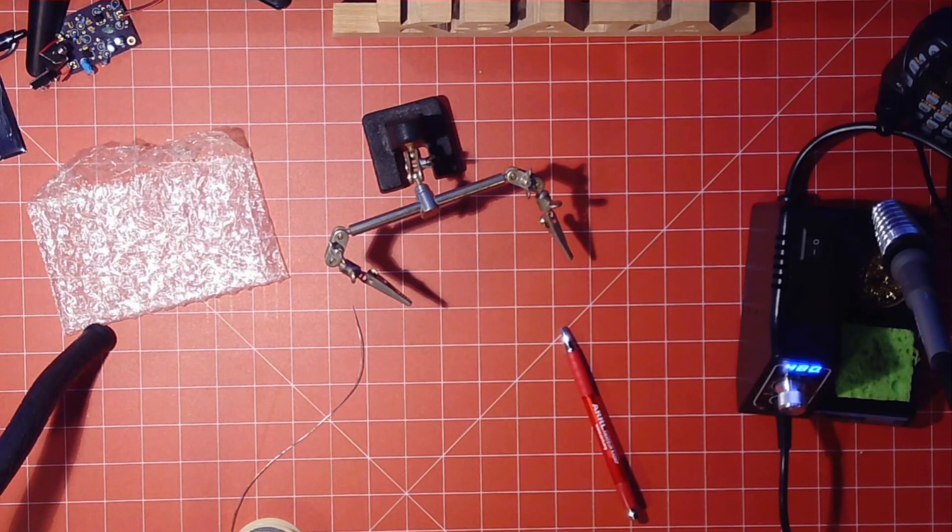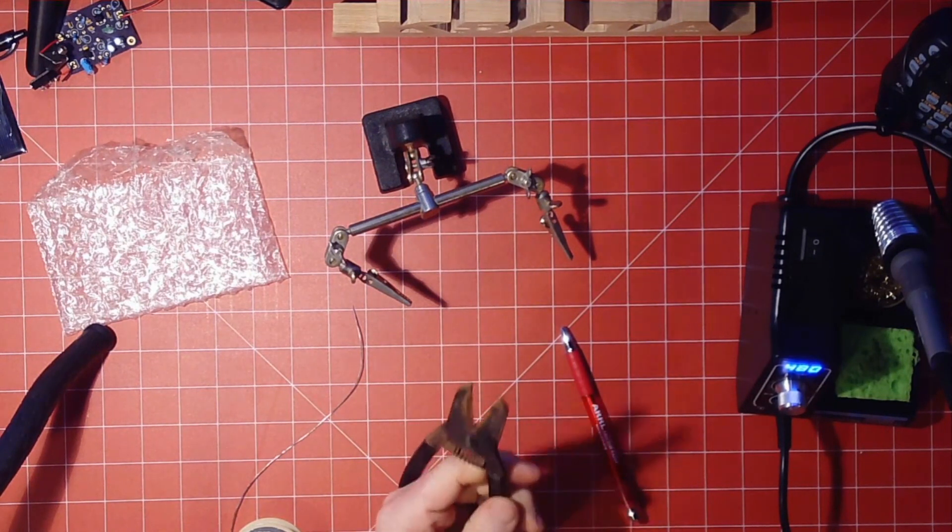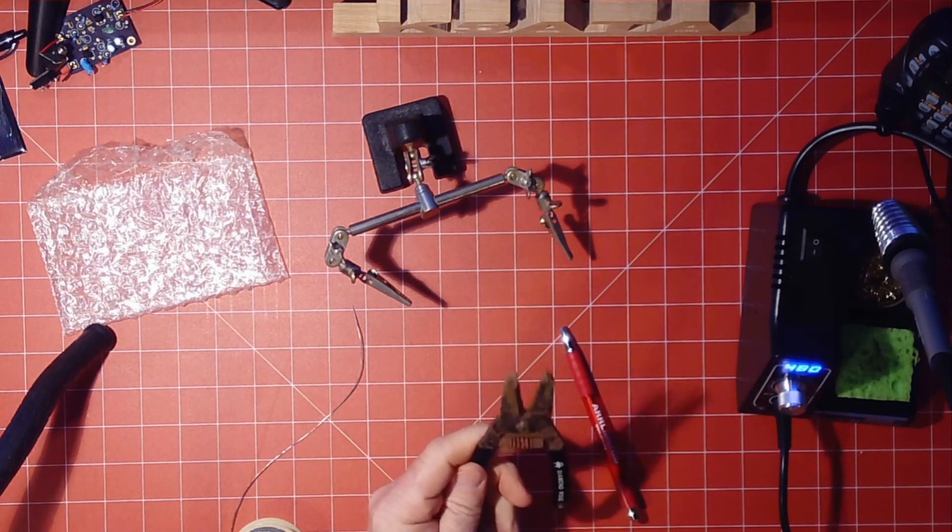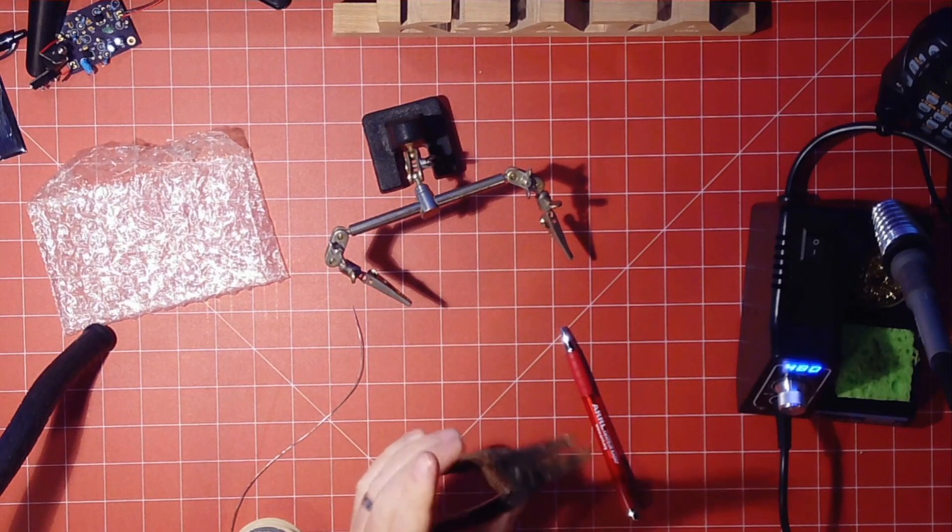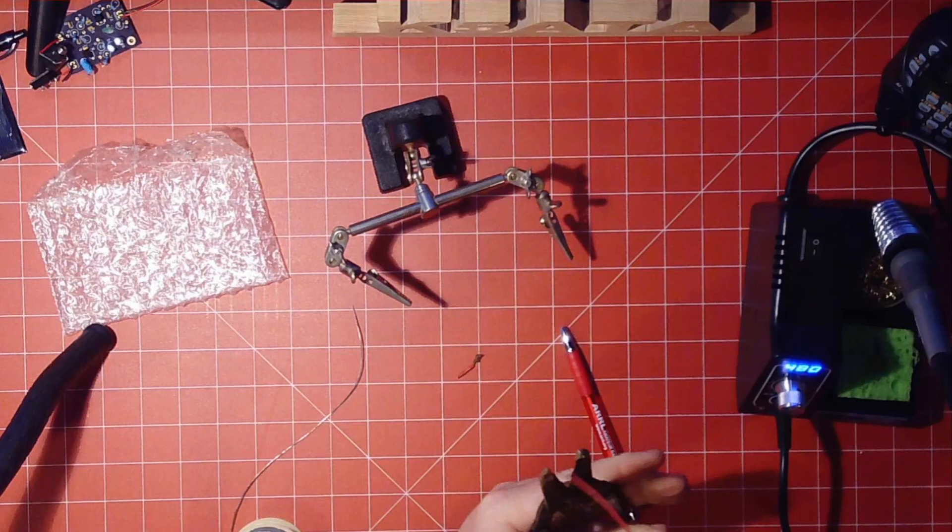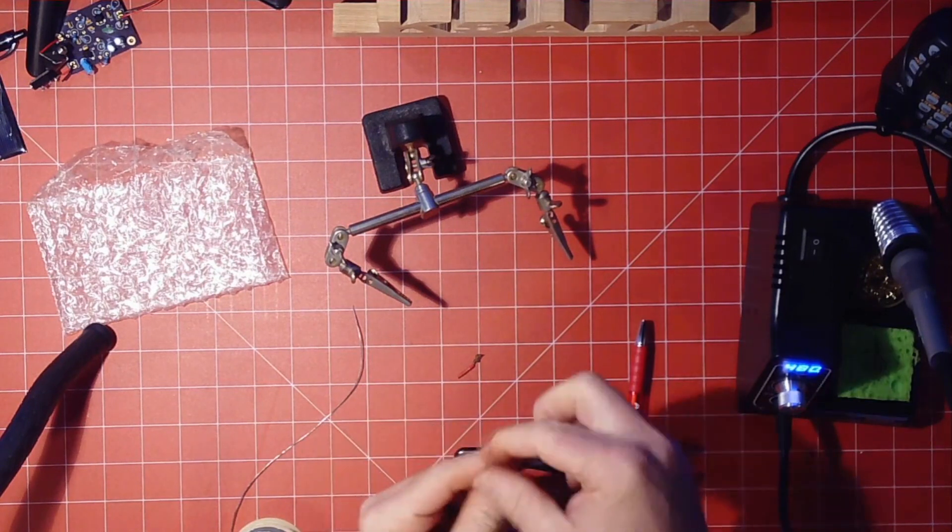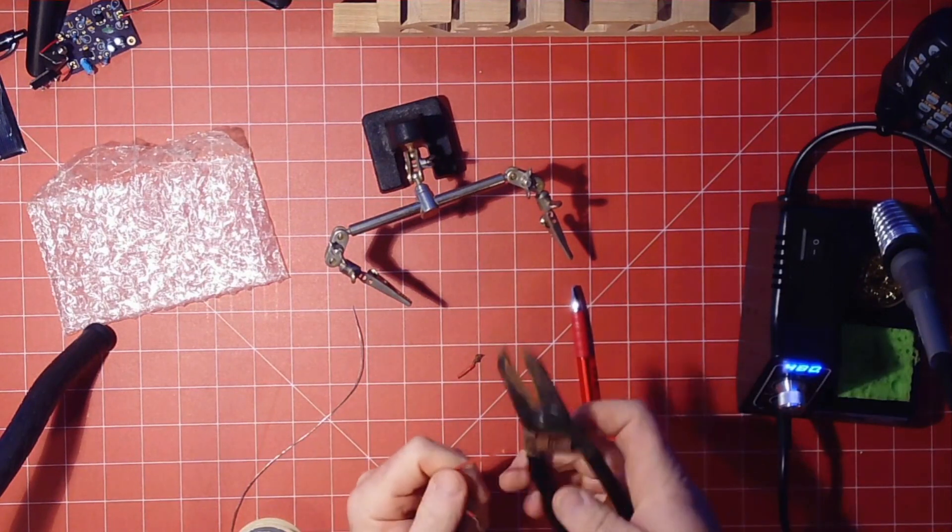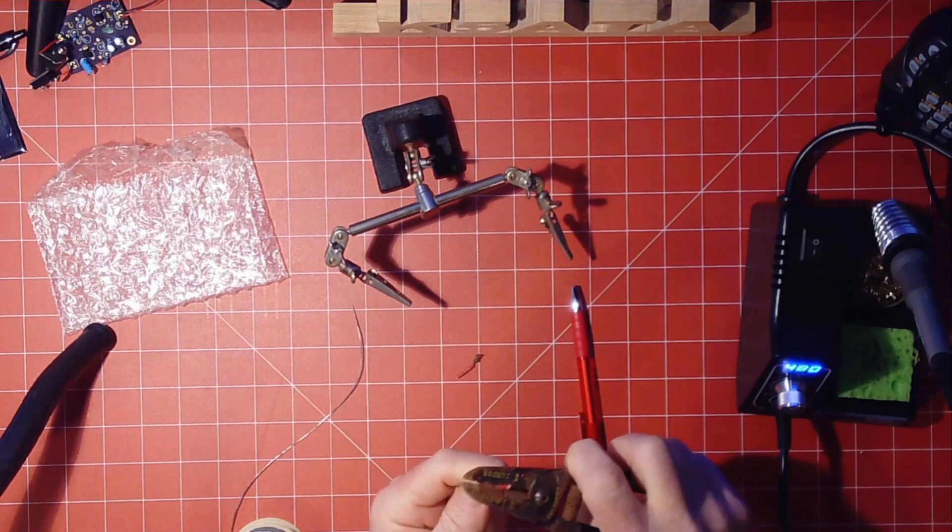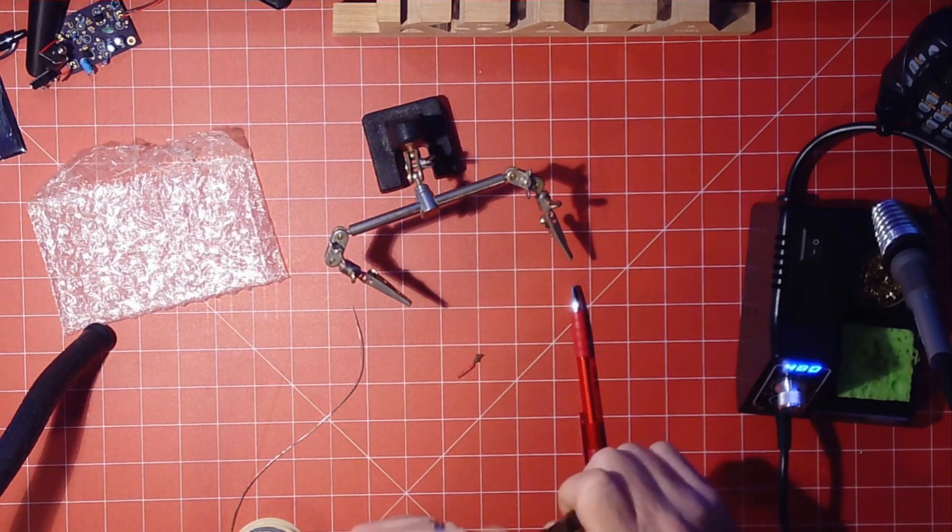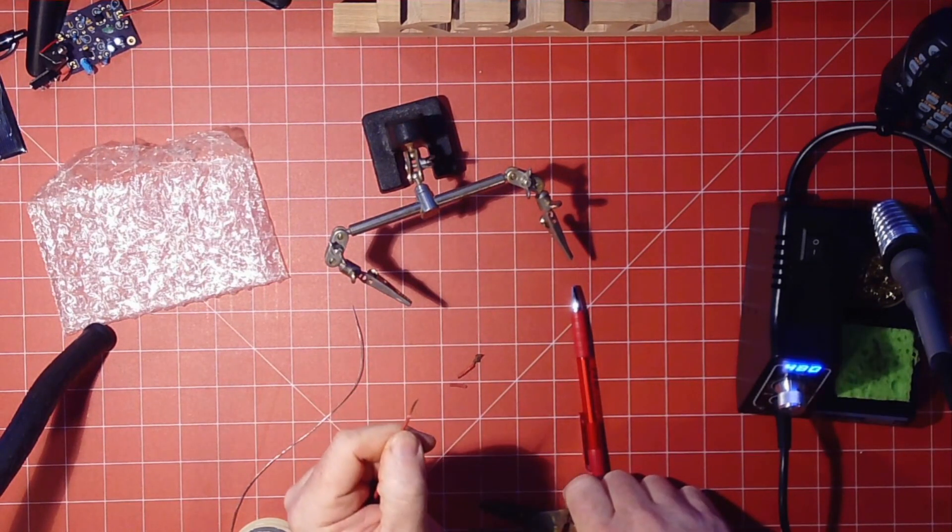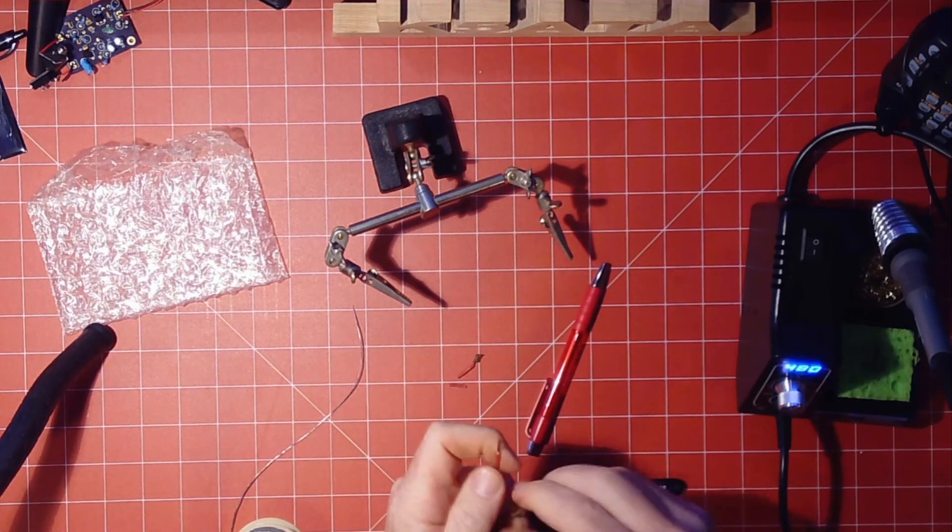A couple things. One, you're going to need a pair of strippers. Now, these are some really old strippers that I have. They've been around forever. These are okay. You can use those. They have cutters on them where you can cut it, and basically you find the hole for the wire gauge, and you kind of cut it and strip it and that works.